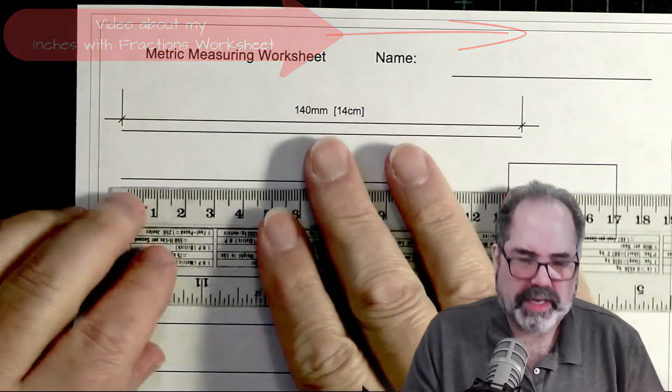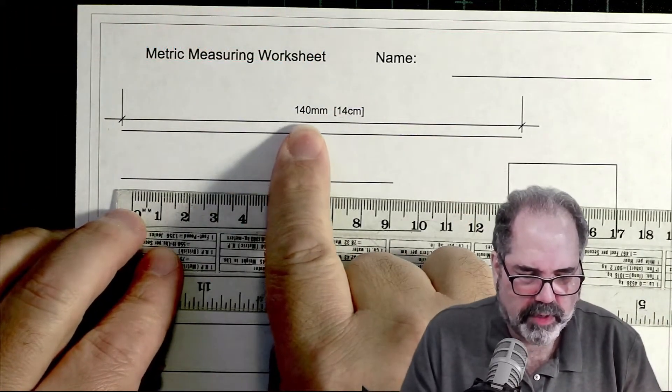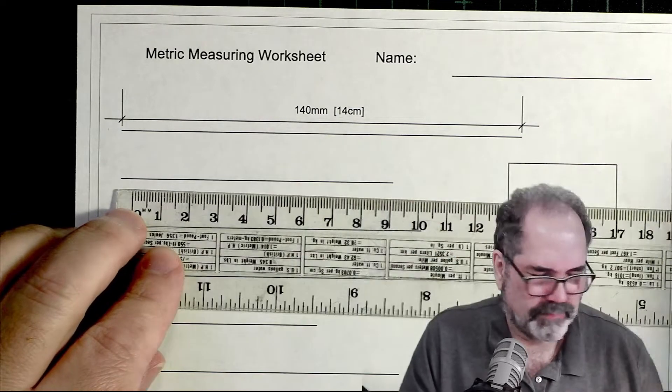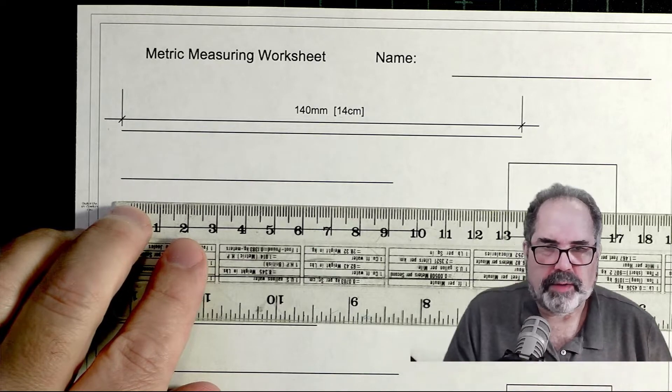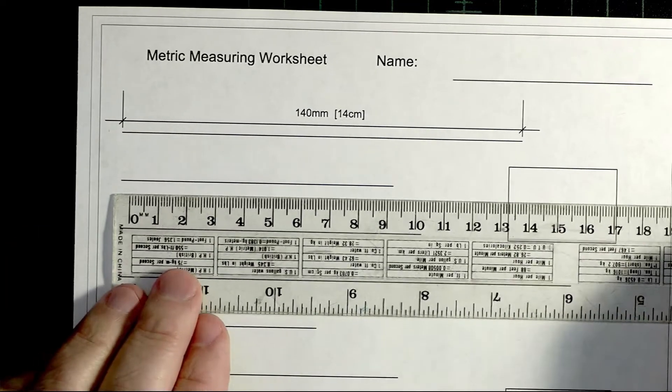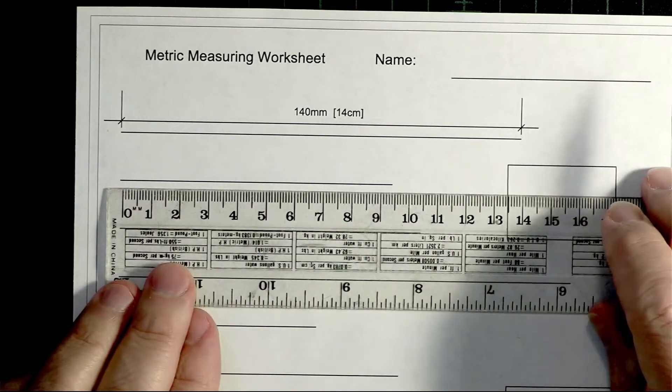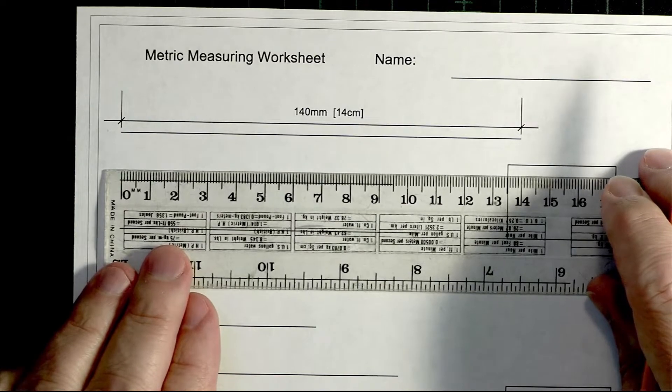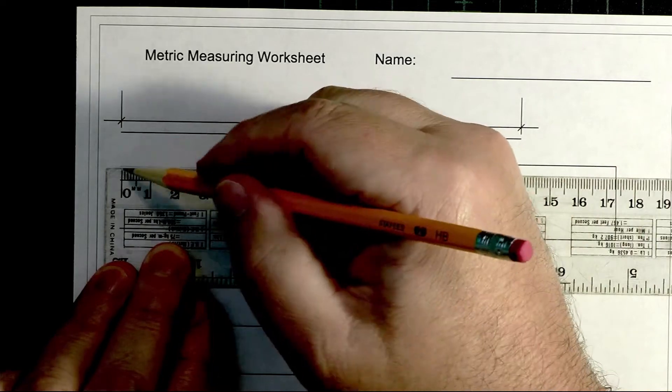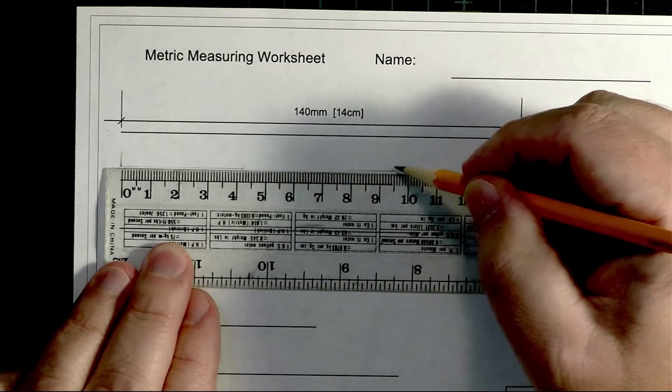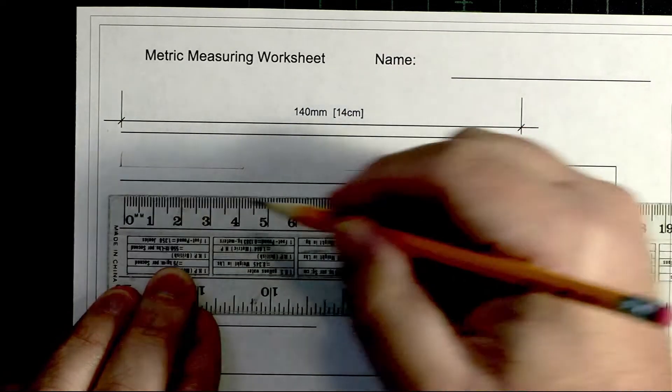My worksheet has the first line already measured at 140 millimeters or 14 centimeters. I'm going to measure the next line. I line up my ruler here, zero to the beginning of the line. Actually, let me first draw a guideline so I can write my measurements here and put a little marker there.